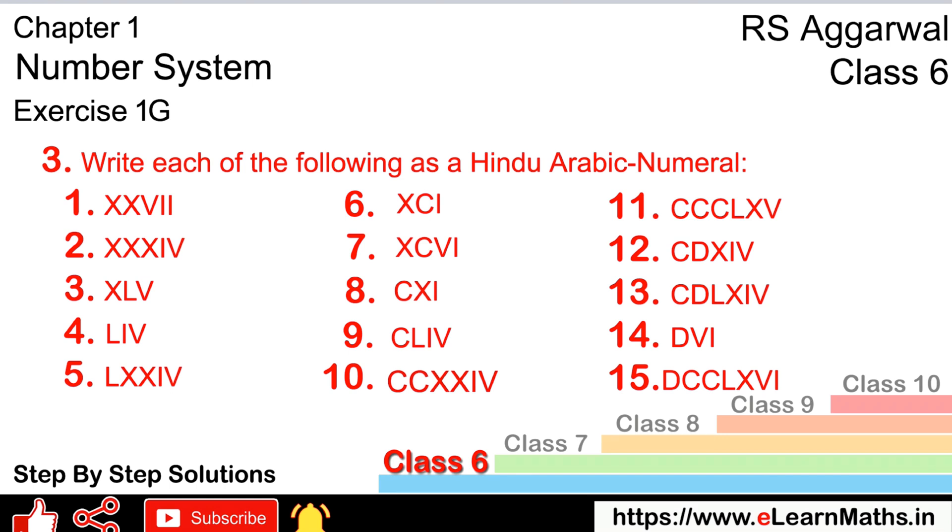Let's do question number third of exercise 1G, that is number system. Question number third is write each of the following as a Hindu Arabic numeral. This form is called the Hindu Arabic numeral, 1 2 3 form.